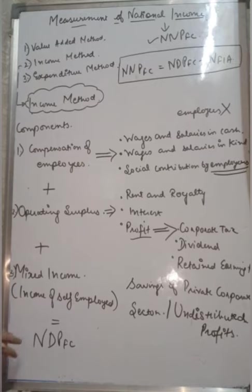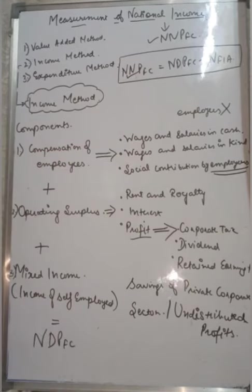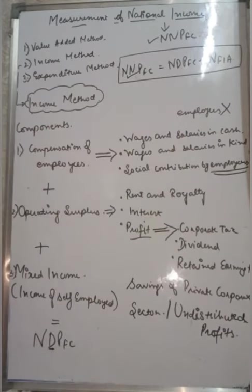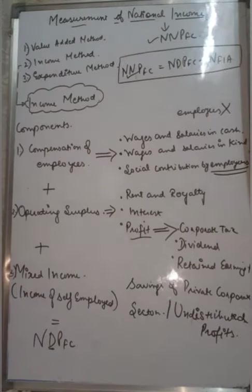Under the income method, we arrive at NDPFC, which we also call domestic income. To move from domestic income to national income, we add net factor income from abroad — that is, factor income earned by residents from abroad minus factor income paid to non-residents. This gives us national income.